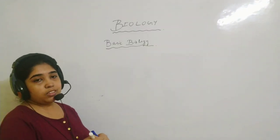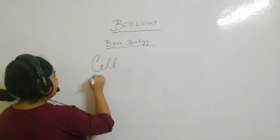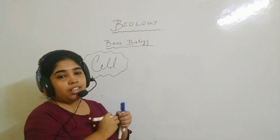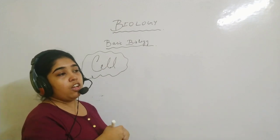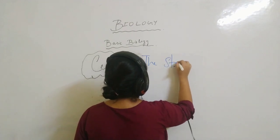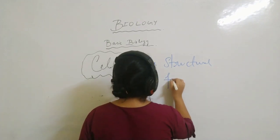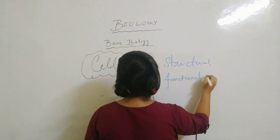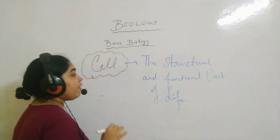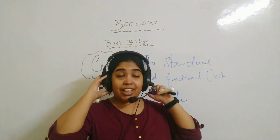So first chapter — very important and interesting — let's start our journey with this chapter. Whatever the term 'cell' you have heard, just remember that it is the structural and functional unit of life. If you open your book, you will understand that this chapter name itself is 'The Structural and Functional Unit of Life.' So whenever anybody asks you what is a cell, just say it's a structural and a functional unit of life.